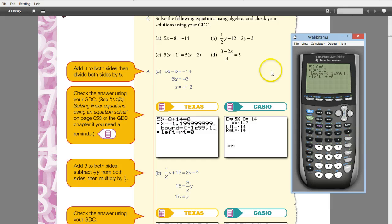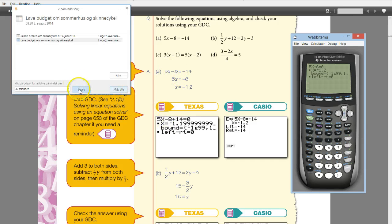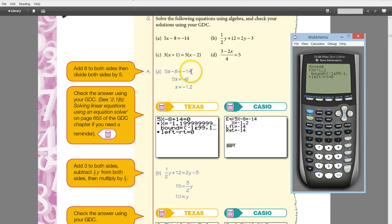You can see here that I put in 5x plus 6 equals 0. They just took this side of the equation, 5x minus 8, and then added 14 on both sides. They didn't even bother to calculate that negative 8 plus 14 is 6. So that's how it works.